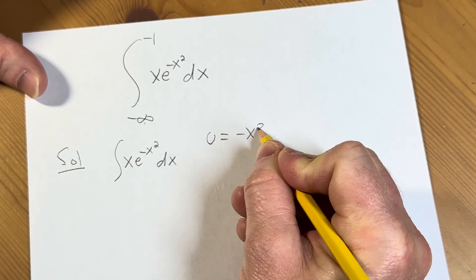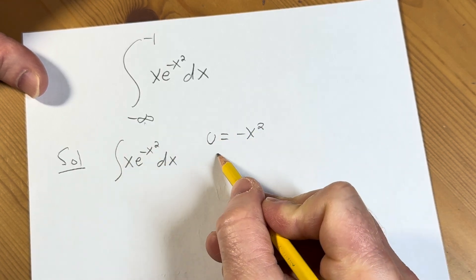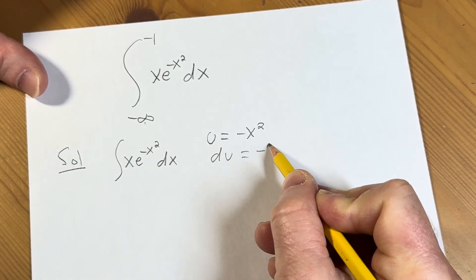We'll let u be equal to negative x squared. That's this piece here. And then du will simply be negative 2x dx.